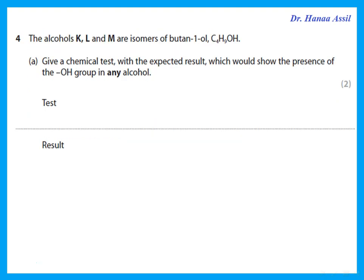Question 4 talks about alcohols K, L, and M, which are isomers of butane-1-ol — so all have C4H9OH. Give a chemical test with expected result to show the presence of an OH group in any alcohol. You should know: add PCl5 (phosphorus pentachloride) and we get misty fumes because it gives out HCl fumes.